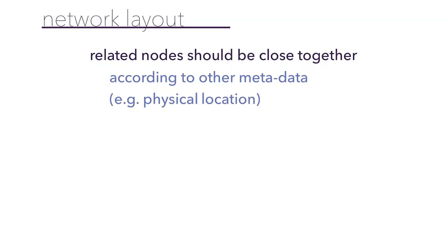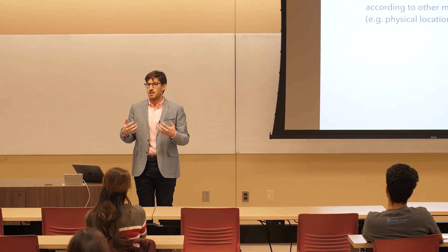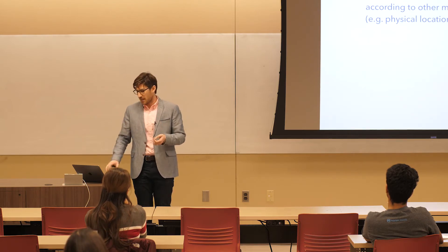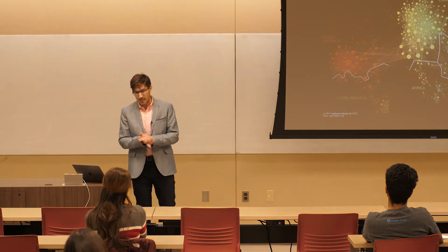Assuming the network structure is the story you want to tell is only one way to represent a network. Maybe your story is about a property of the nodes, and you want to see how that relates to the network structure. Another thing you can do is talk about an embedding space — maybe it's physical space. In transportation networks and electrical networks, nodes have a relationship in the network but also a very physical relationship in real space.